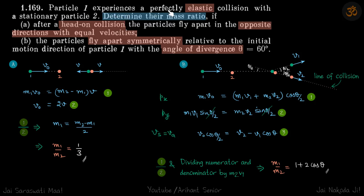Particle 1 experiences an elastic collision with stationary particle 2. We need to determine the mass ratio. In case 1, after a head-on collision, the particles fly apart in opposite directions with equal velocities. Initially particle 1 comes with velocity v_naught, and after striking, both go opposite ways with equal velocities.